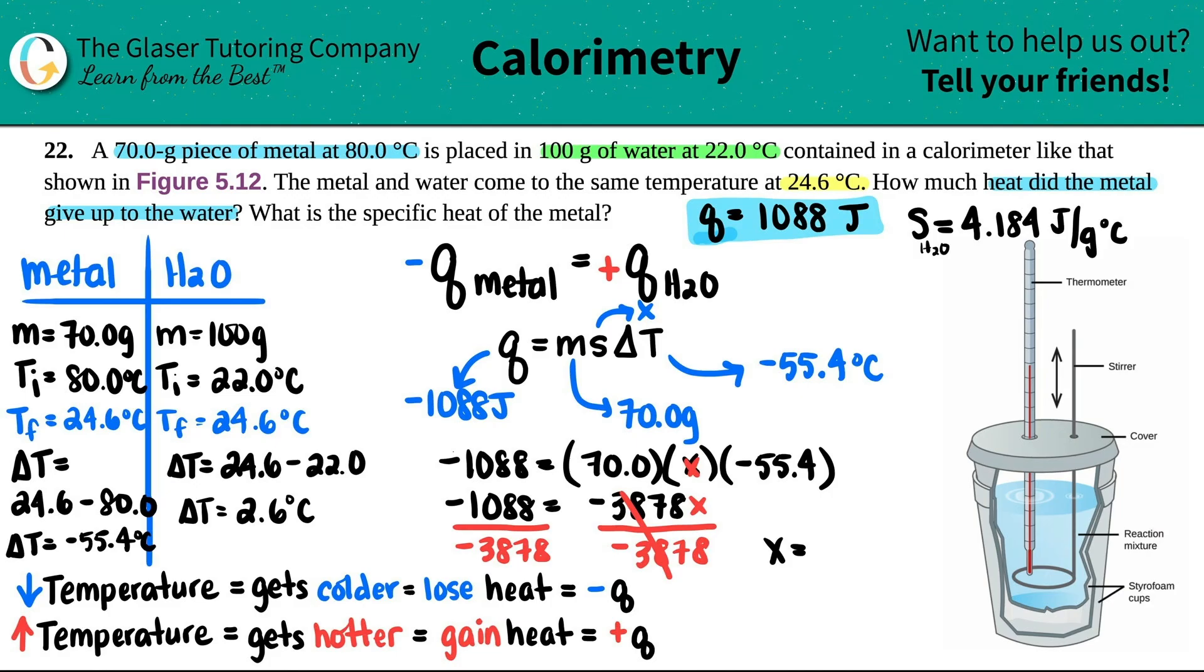So x, which is the specific heat, 1088 divided by this number, I get 0.28, and looks like for here, maybe three sig figs, joules per gram degree Celsius. And there you go. So that's the specific heat of the metal.